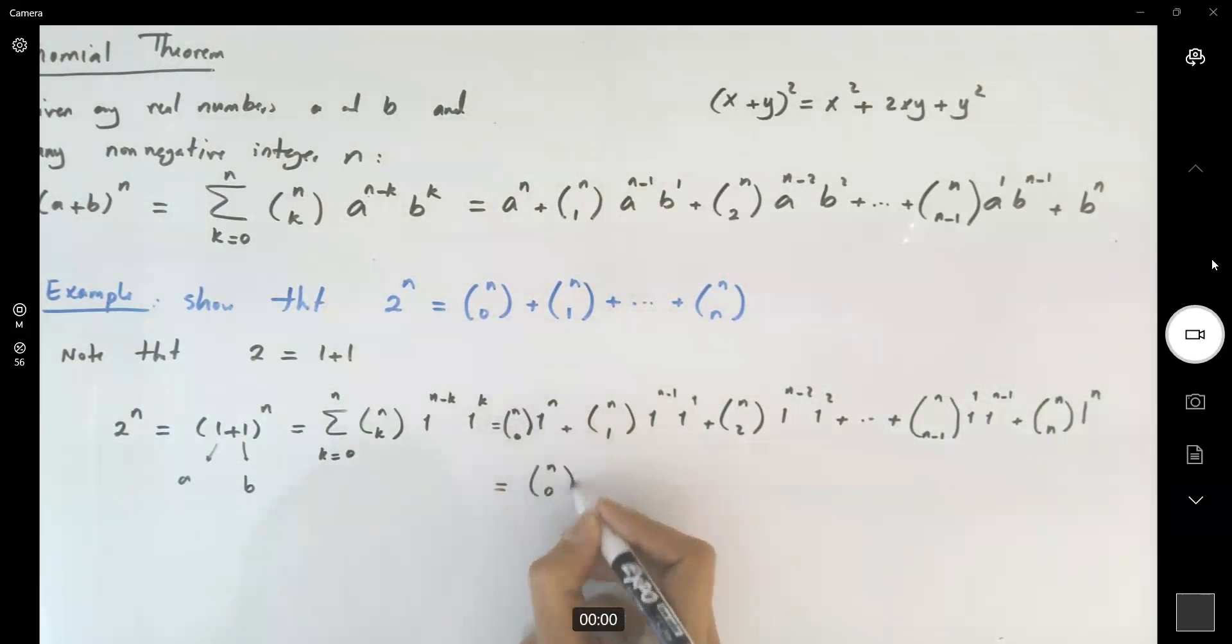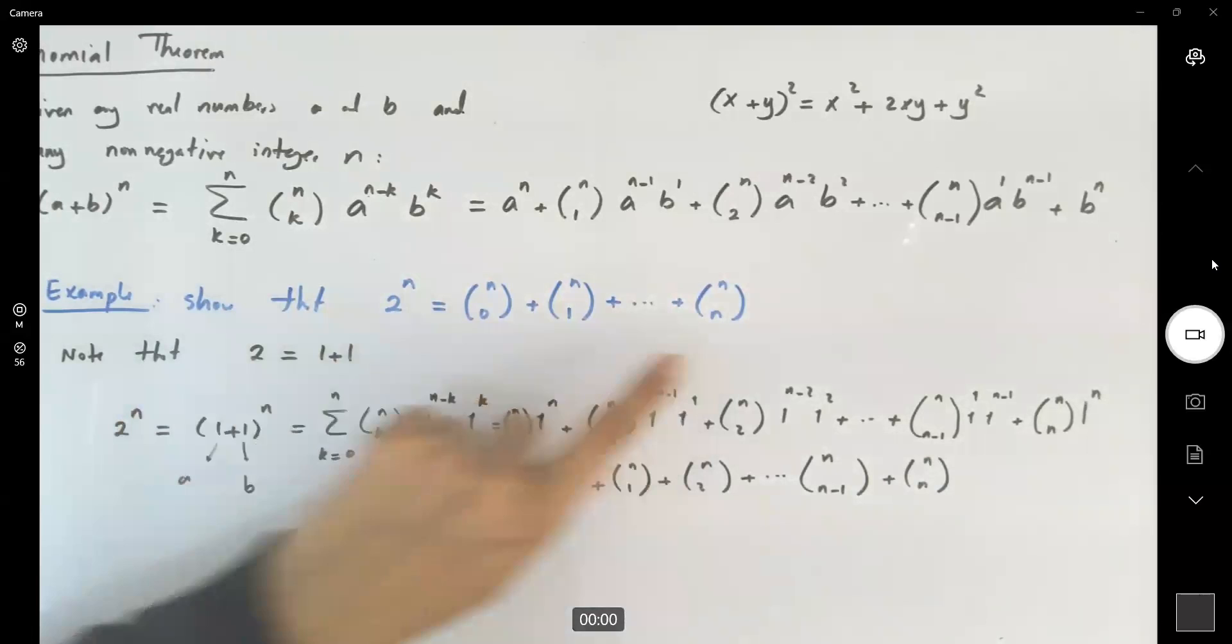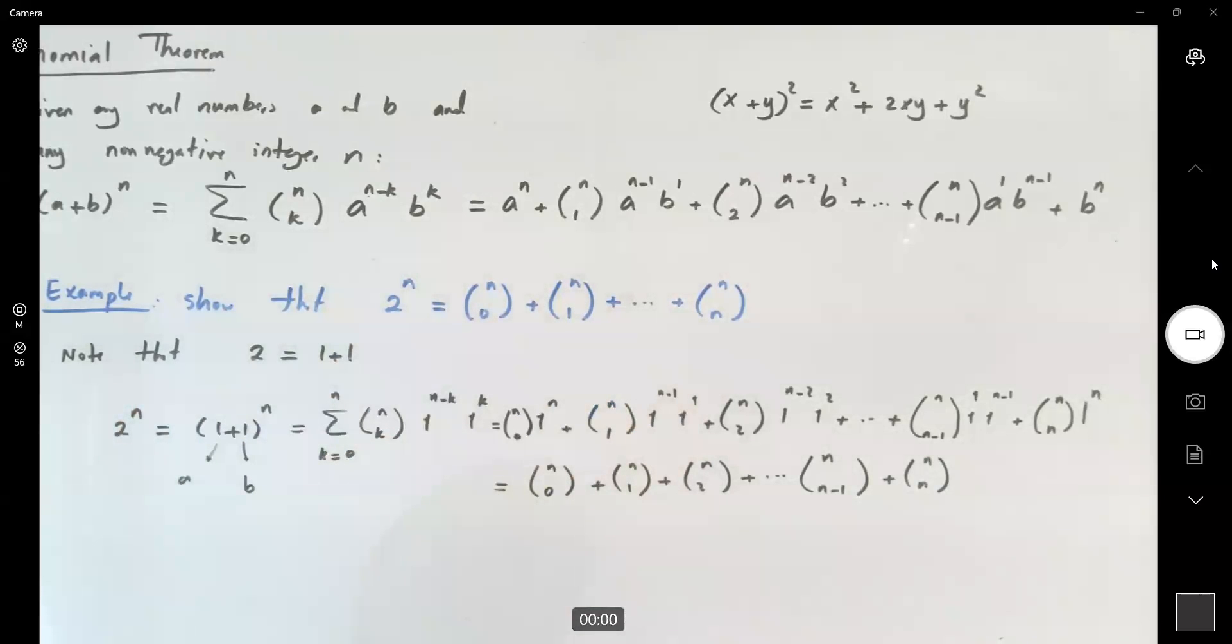0 of n, 1 out of n, 2 of n, and then the rest of the terms, n minus 1 of n, plus n out of n combination. But we just showed that 2 to power n can be written as the sum of the combinations using the binomial theorem.